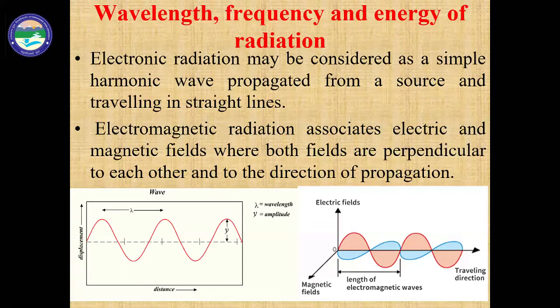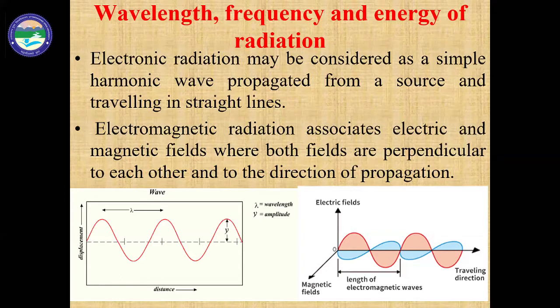Regarding light: there are three important parameters — wavelength, frequency, and energy. Light behaves like a simple harmonic wave from a source and moves in a straight line. Since it is light, it has two components: one is the electric field component and another is the magnetic field component. Both components are perpendicular to each other and perpendicular to the direction of propagation — this is how light propagates.